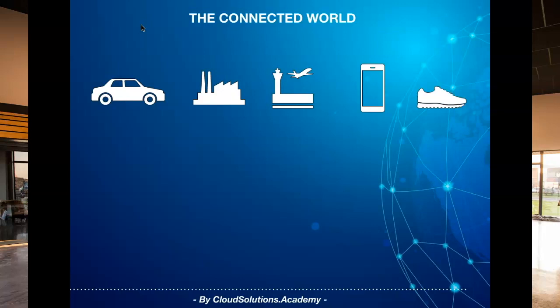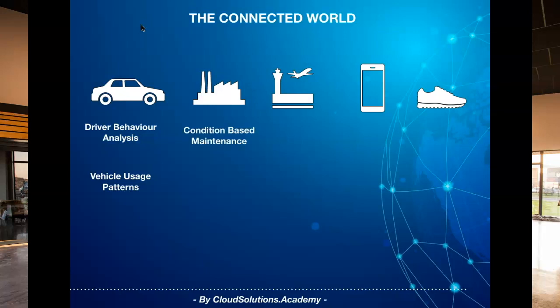From a connected vehicle solution, you can understand dynamics like driver behavior analysis and vehicle usage patterns. From a connected machine solution, you can determine when machines need servicing and can order parts in advance. From a connected airport solution, you can understand things like how much time a passenger needs to wait for check-in and security. From an operational perspective, it could help optimize passenger movement and ensure the right equipment is available at the right time.